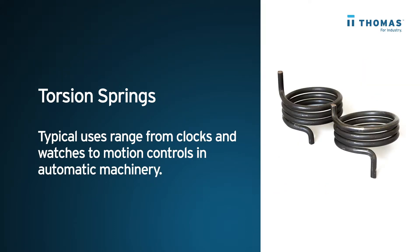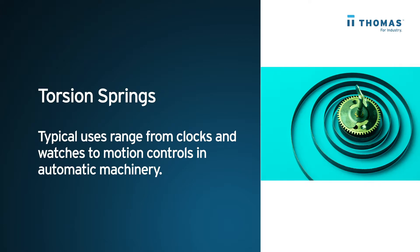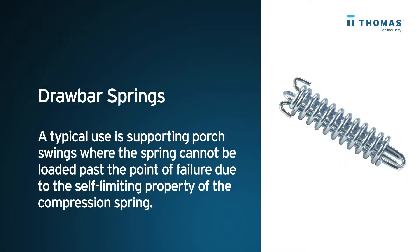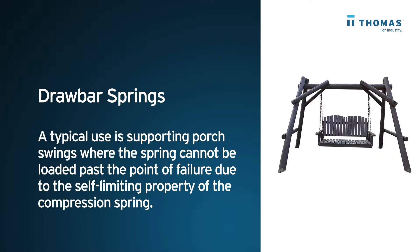Torsion springs. Typical uses range from clocks and watches to motion controls and automatic machinery. Draw bar springs. A typical use is supporting porch swings, where the spring cannot be loaded past the point of failure due to the self-limiting property of the compression spring.